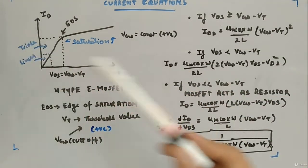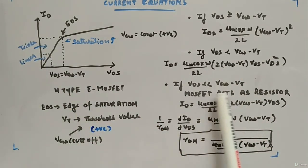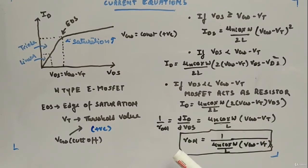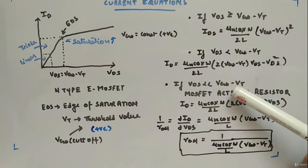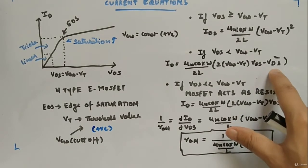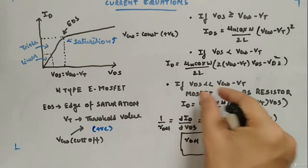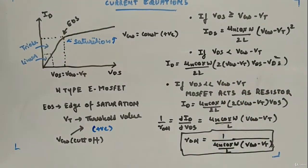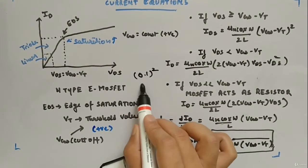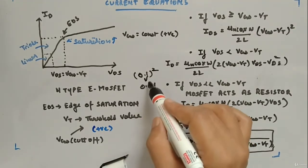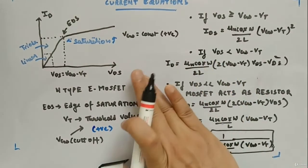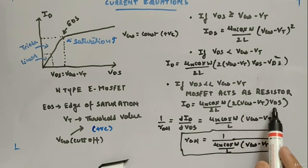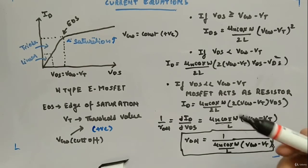Within the triode region, when Vds is very much less than Vgs minus Vt, the MOSFET acts as a linear resistor. In this case, Vds² becomes negligibly small — for example, if Vds = 0.1, then Vds² = 0.01, which is even smaller. We therefore ignore the Vds² term, leaving: Id ≈ μn·Cox·(W/2L)·2(Vgs − Vt)·Vds.